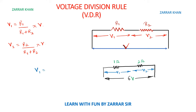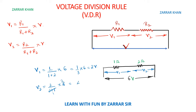My V1 will be — what is the resistance across V1? It is 1 ohm. So 1 divided by 1 plus 2, into 6, which turns out to be 1 upon 3 into 6, and the final answer is 2 volts. For V2, it will be 2 upon 1 plus 2, into 6 — so 2 upon 3 into 6 gives 4 volts.